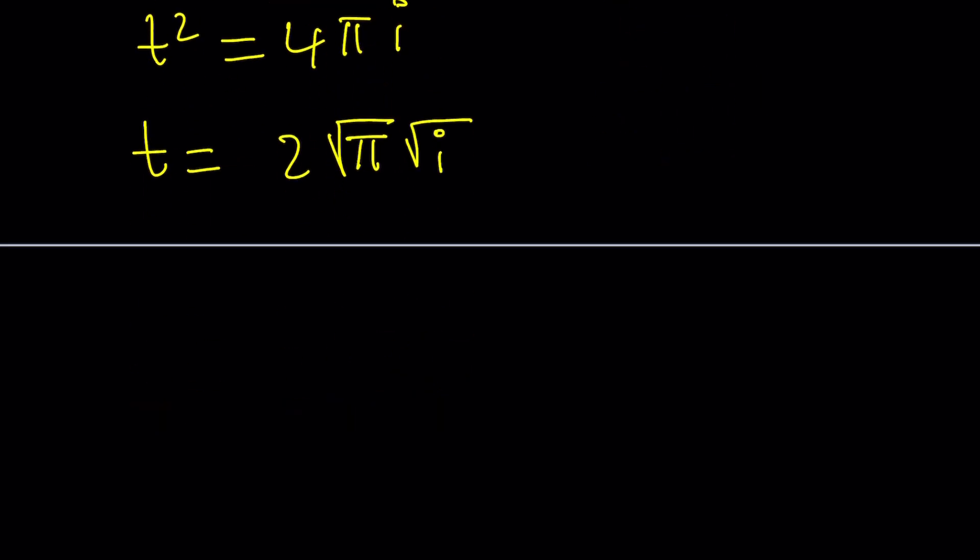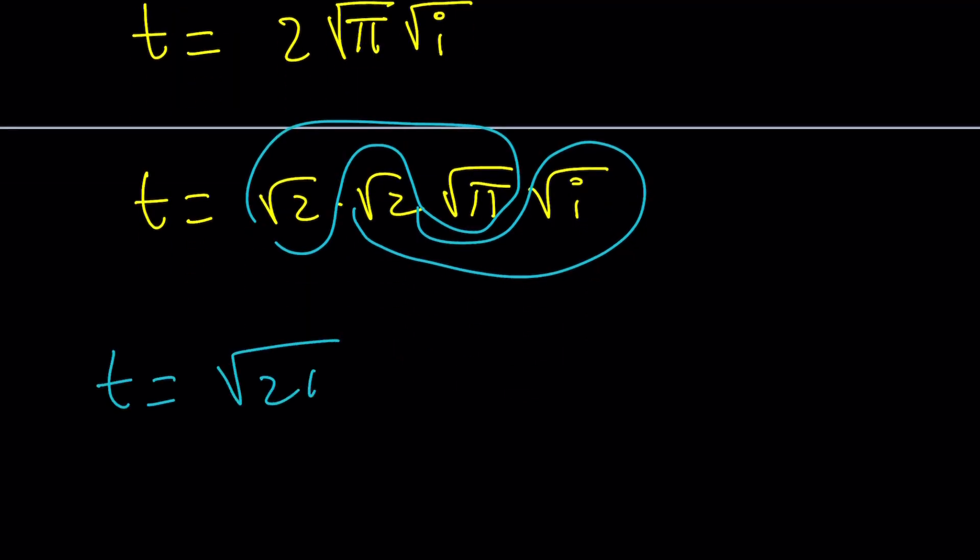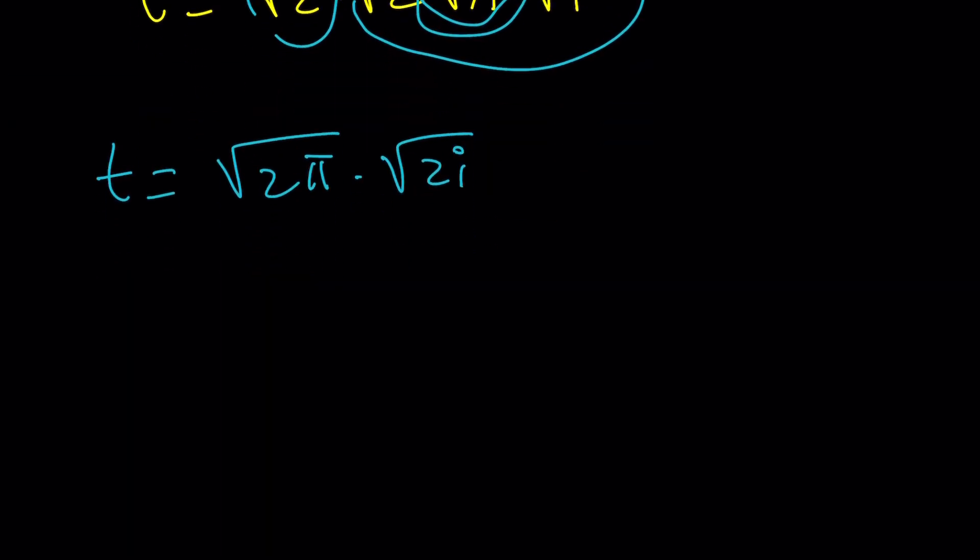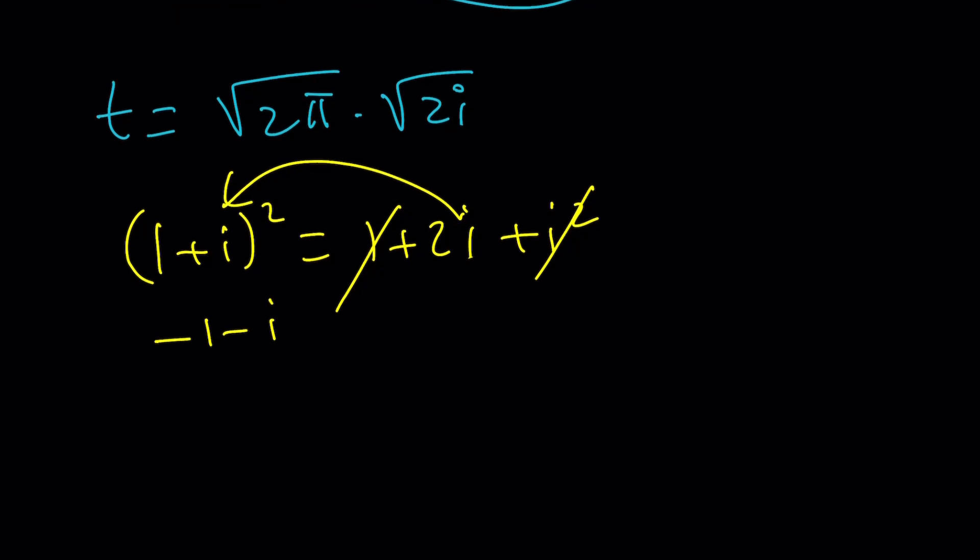Now, here's what I'd like to do. Split up the 2 into root 2 times root 2, and then pair it up with these radicals, kind of like this. Put these two together, and put these two together. Make sense? So we can write it as square root of 2 pi times the square root of 2 i. So why do you think I wrote 2 i instead of i? Because I do know the square root of 2 i, one of the square roots at least, is 1 plus i. Why? Because if you square 1 plus i, you get 1 plus 2 i plus i squared, but i squared is negative 1, so it's 2 i. If you square root it, one of them is going to be 1 plus i, the other one is going to be negative 1 minus i, but that's going to give us another solution. Let's stick with 1 plus i. So t becomes the square root of 2 pi times 1 plus i.